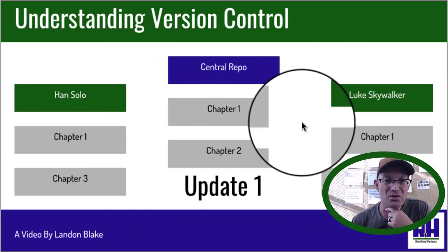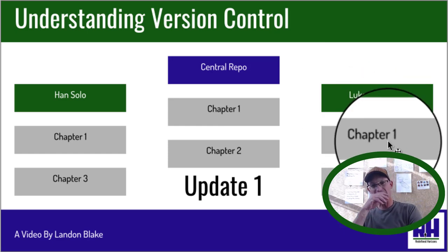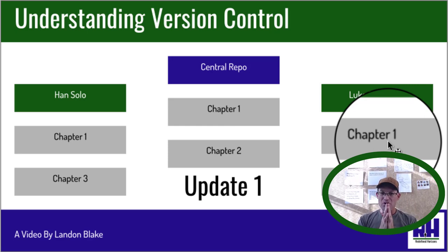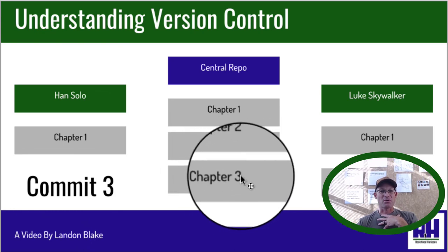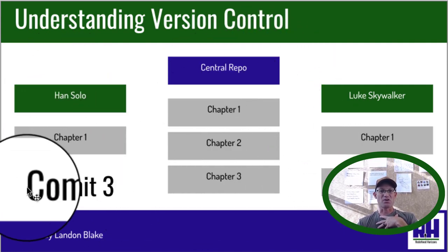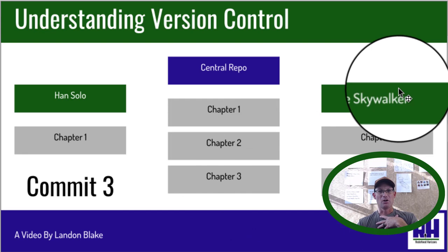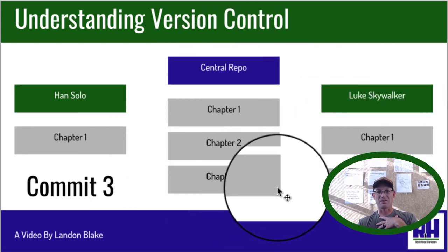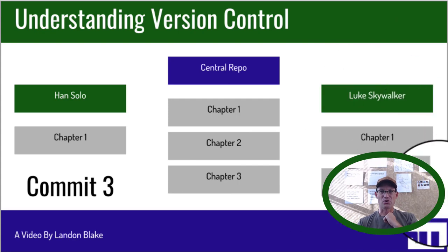Luke has gone ahead and updated, so now he has a copy of chapter one that Han made — it now lives in his repo. Let's go ahead and have Han commit chapter three, and then we'll show you what happens when there's a conflict. Han has now committed chapter three — it's still in his local copy, but chapter three is now in the repo. That's the third commit: Han committed chapter one, Luke committed chapter two, then Han committed chapter three. Luke doesn't have chapter three yet because he only did one update and hasn't done a second update to get it. Now let's say there's some miscommunication and Luke starts chapter three instead of chapter four.